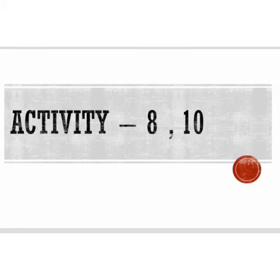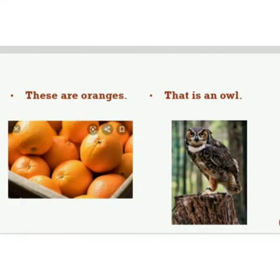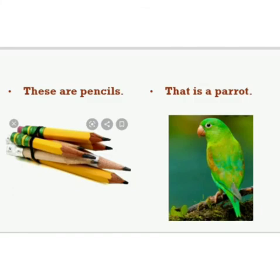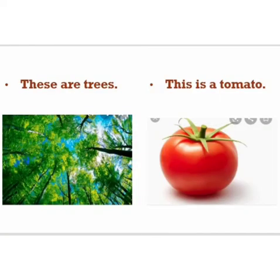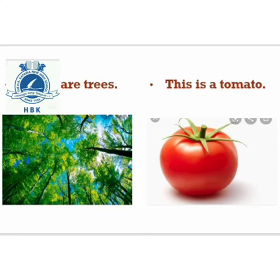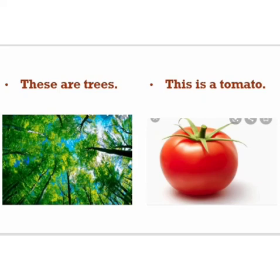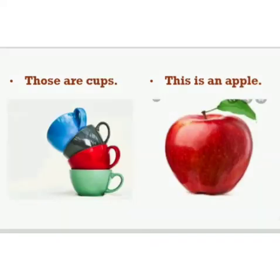Next Activity 8 and 10: ચિત્ર પરથી વાક્ય બનાવો. First sentence: These are oranges. That is an owl. Next sentence: These are pencils. That is an owl. This is a parrot. Next sentence: These are trees. This is a tomato. These are trees. Those are cups. This is an apple. Vidyaarthi O, these sentences — write them in your classwork.